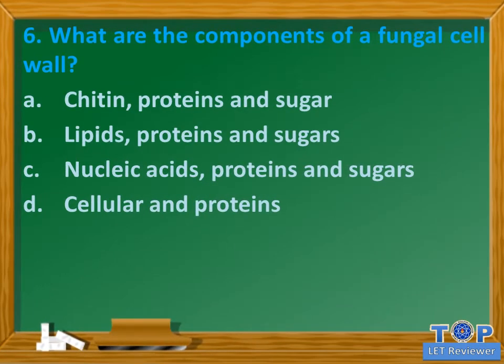Question number 6. What are the components of a fungal cell wall? A. Chitin, proteins and sugars. B. Lipids, proteins and sugars. C. Nucleic acids, proteins and sugars. D. Cellular and proteins.